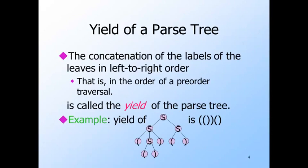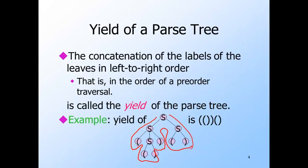The yield of a parse tree is the string of labels of the leaves from the left. This order of leaves is the order you visit them during a pre-order traversal, which goes around the tree counterclockwise. The order in which you visit the leaves is the order in which their labels appear in the yield. So here the yield is left paren, left paren, right paren, right paren, left paren, right paren.